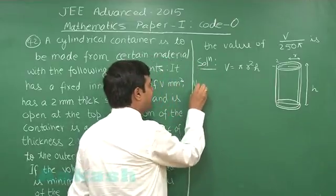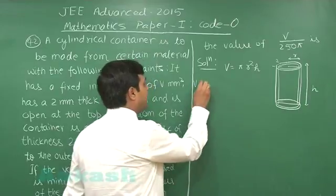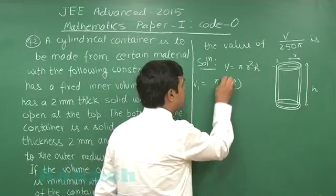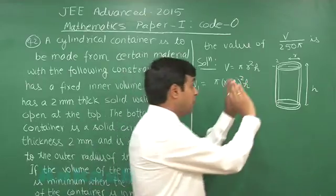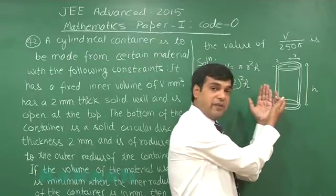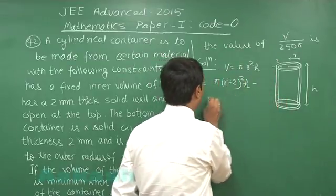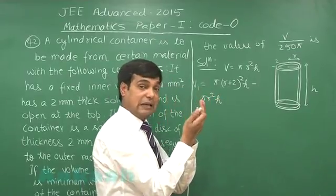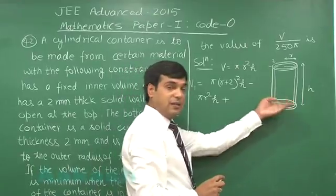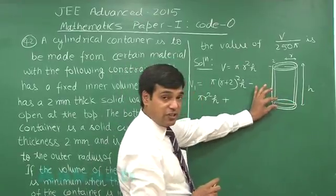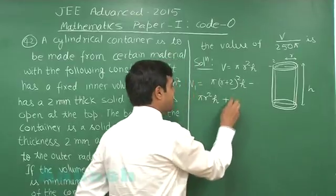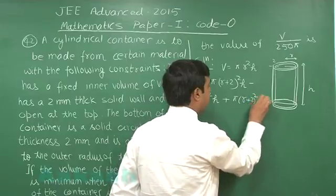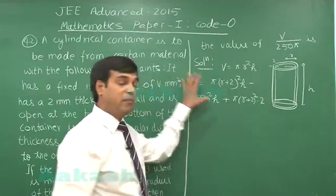So we can consider volume V1, the required one, it will be pi(r+2)² into h, that is with respect to the outer surface, minus pi r² h with respect to the inner surface, plus the base. Base is 2 mm thick. So it is a cylindrical disk, pi(r+2)² into 2. This is to be minimized.